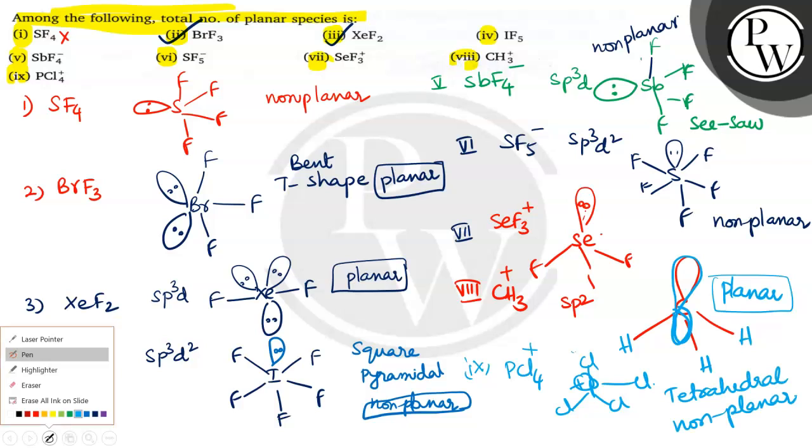Okay. Now let us count how many are planar. Second option is planar. Third option is planar. And the eighth one is planar. Option 2, option 3, and option 8. Only three species are planar. Answer is 3.